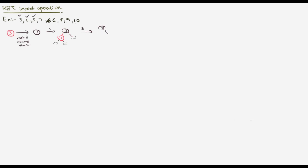So we have 3, 1, 5. Root is black. It's not always necessary to draw the null nodes — if you can keep them in mind it's easier. Black heights are still the same, so we haven't violated any Red-Black Tree properties. Let me continue and insert 7. I'm pretty sure this insertion will make our tree invalid.